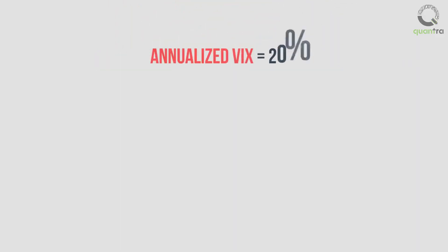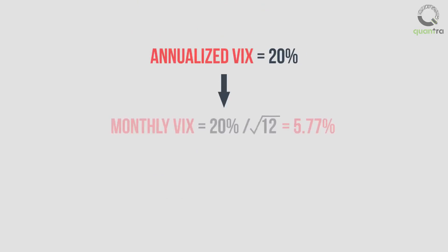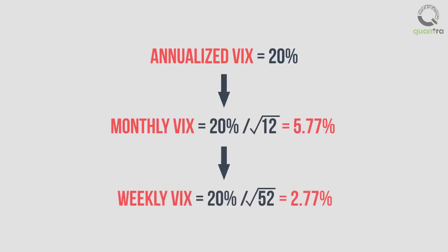This annualized number of VIX of 20% can be transformed into a monthly number by dividing it by the square root of 12, which is equal to 5.77% on a monthly basis. Similarly, weekly VIX can be obtained by dividing the annualized value by the square root of 52, which is 2.77% on a weekly basis.